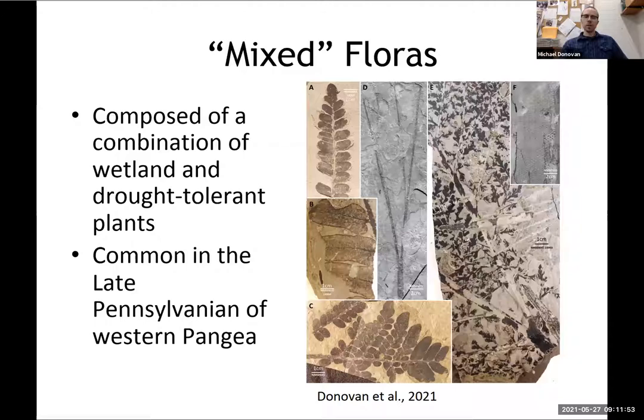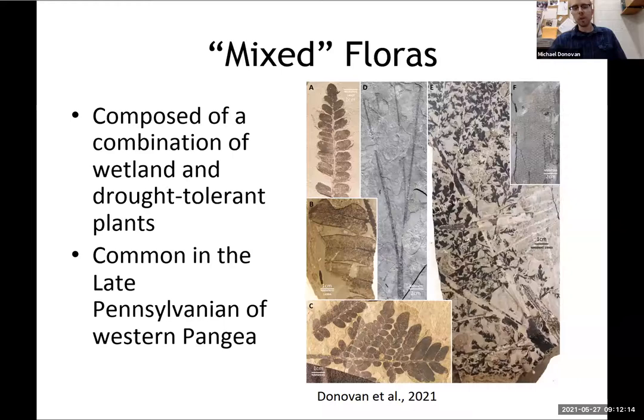Now I'm going to talk about mixed floras, which are composed of a combination of wetland and drought-tolerant plants. These are really common in the late Pennsylvanian Western Pangea. Here's an example from the Kinnebrick quarry, which is from the Casimovian-Missourian of New Mexico, USA. You can see Neuropteris, which is a wetland plant, and a variety of Sphenopteridium, which is more from dryland areas — showing how these are found in the same beds representing different microhabitats in the overall environment.